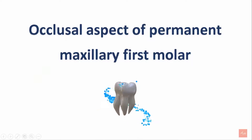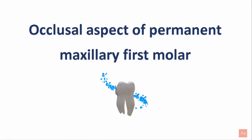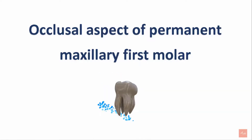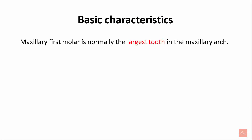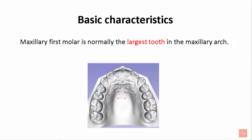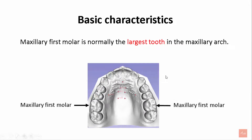Welcome back to Mediglass. Today we'll cover the occlusal aspect of the permanent maxillary first molar. Let's see the basic characteristics. The maxillary first molar is normally the largest tooth in the maxillary arch.